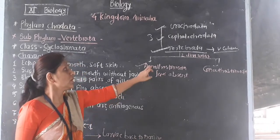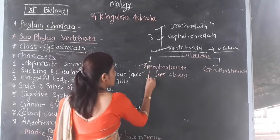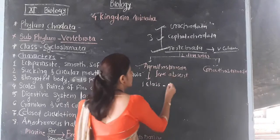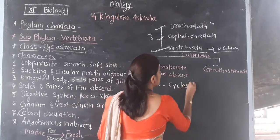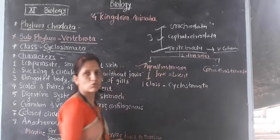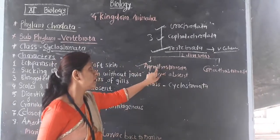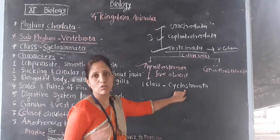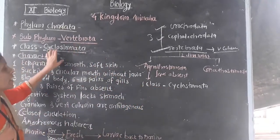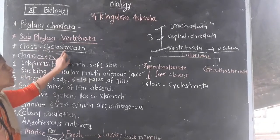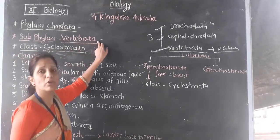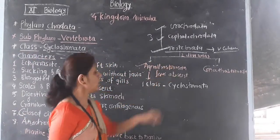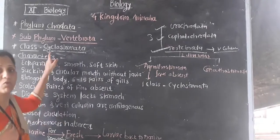Today we are discussing Agnathostomata, which includes only a single class — Class Cyclostomata. So now we are discussing the characters of Class Cyclostomata, which belongs to subphylum Vertebrata and division Agnathostomata. We will discuss these characters one by one.